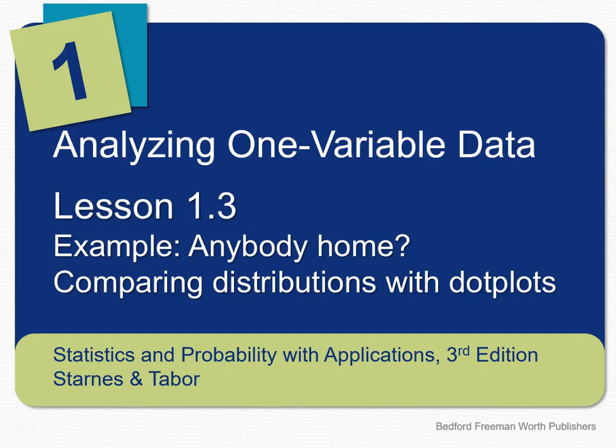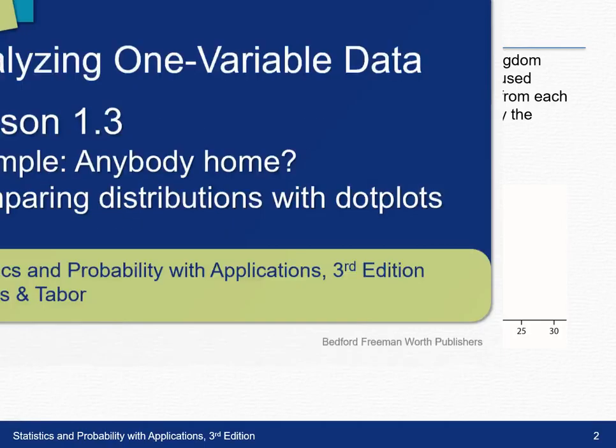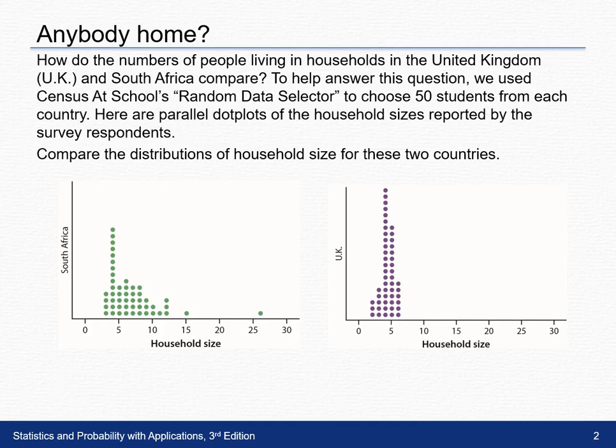Hi, today we're going to look at Lesson 1-3 in the example, 'Is Anybody Home?' We're going to compare distributions with dot plots. How did the number of people living in households in the United Kingdom, UK, and South Africa compare?